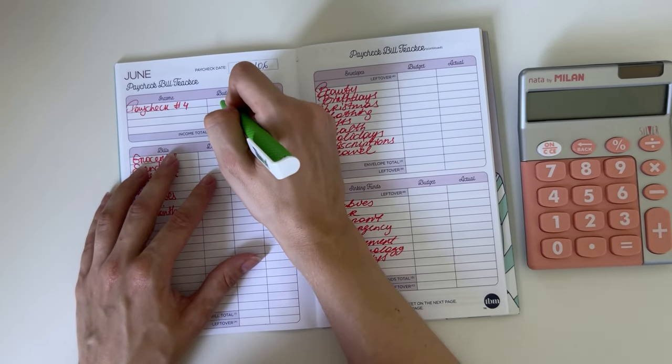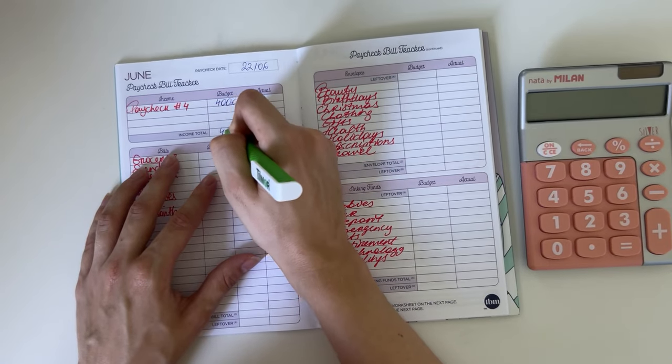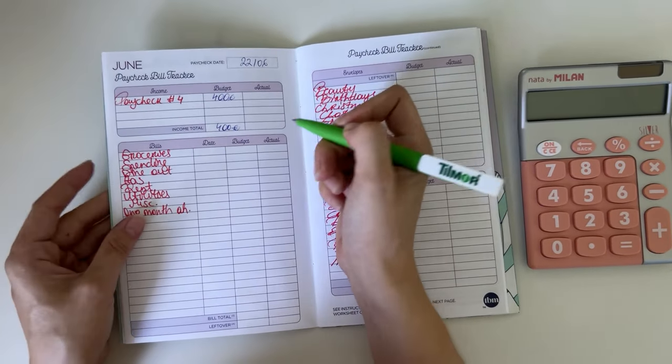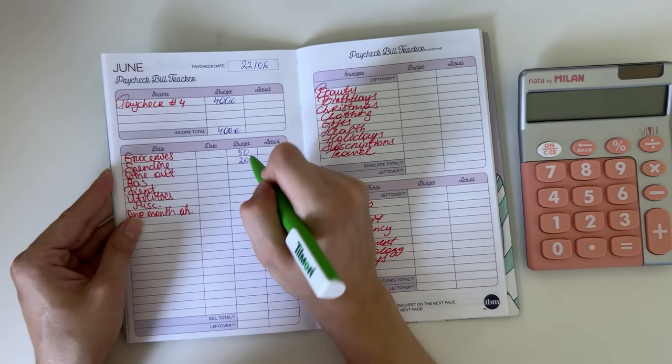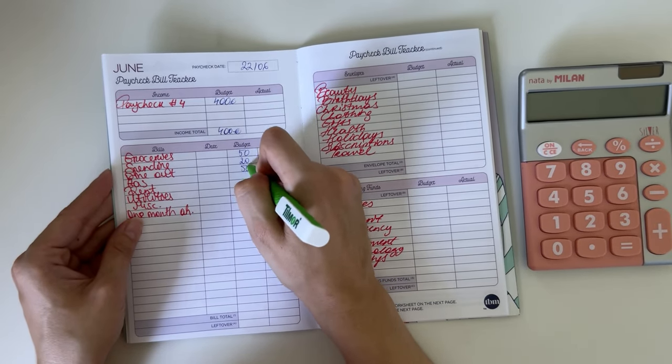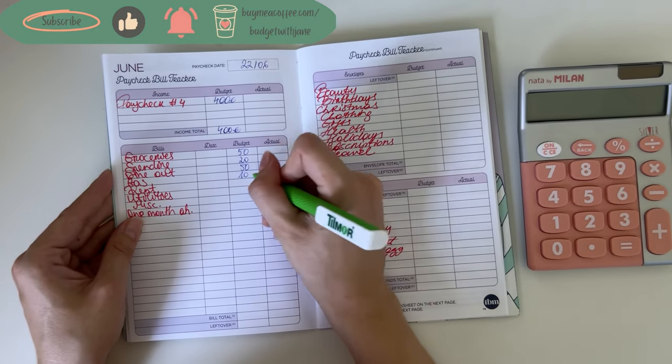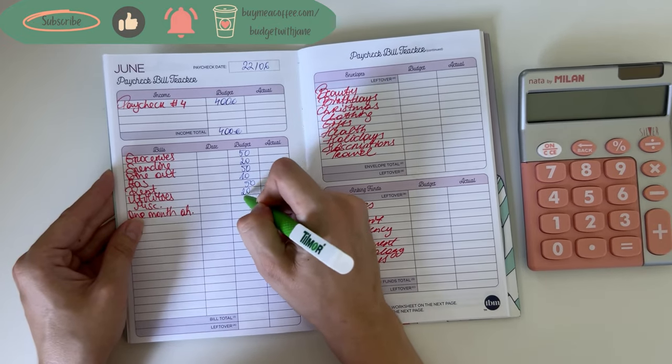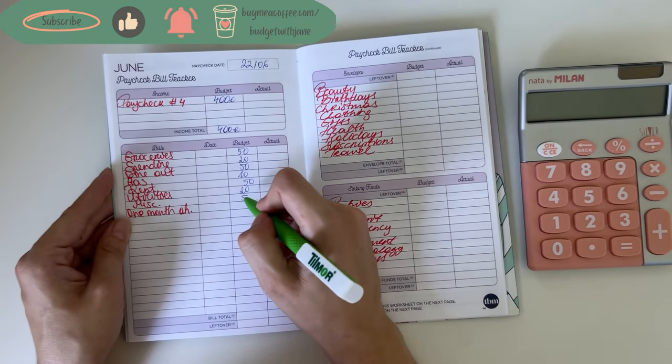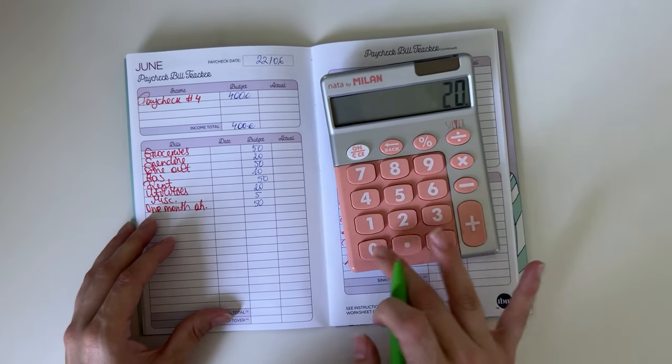The paycheck we're working with is 400 euros for this week. Groceries is going to get 50, 20 into spending, and dine out also 50. 10 is going into gas, 50 in rent, utilities is going to get 25, miscellaneous 5, and 50 in one month ahead. In total, let's see how much that is.